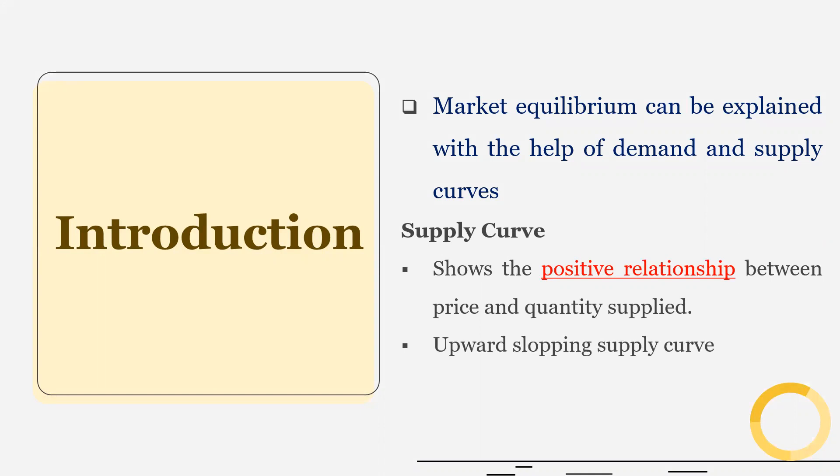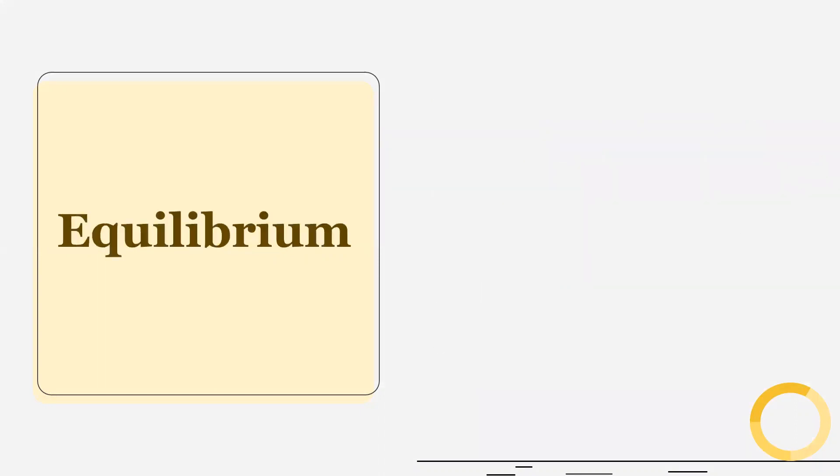You can find our video on demand theory and supply theory. The link is given in the description. Now, market achieves equilibrium when quantity demanded and quantity supplied are equal.